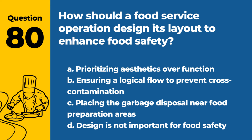Question 80. How should a food service operation design its layout to enhance food safety? a. Prioritizing aesthetics over function. b. Ensuring a logical flow to prevent cross-contamination. c. Placing the garbage disposal near food preparation areas. d. Design is not important for food safety. Answer: b. Ensuring a logical flow to prevent cross-contamination. A well-designed layout is important for efficient and safe food handling.